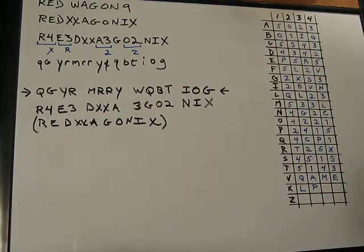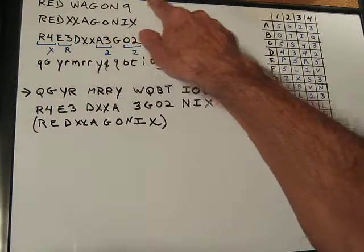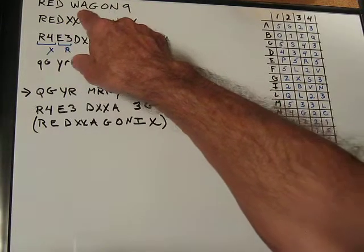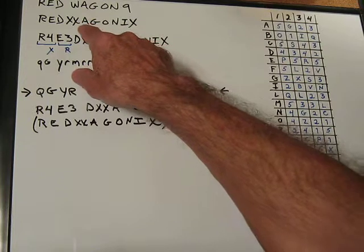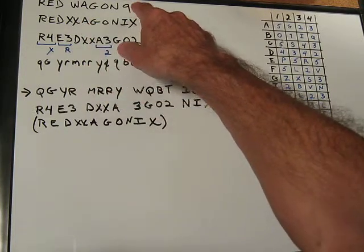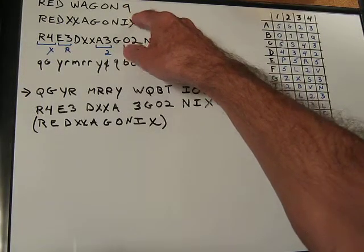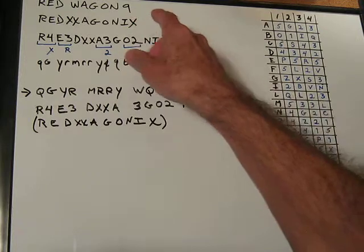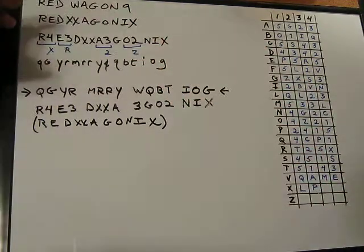When we preprocess our password — in this case I'm using redwagon9 — in Alberti's cipher there is no W, so I'm replacing the W in wagon with XX, our digraph for W. And of course we don't have a full base-10 system, so I'm using Roman numeral IX for the 9. So this is, in its most basic form, our unencrypted message: redwagon9.